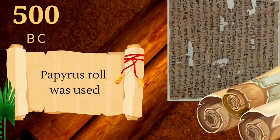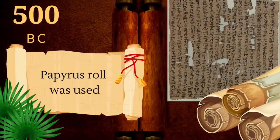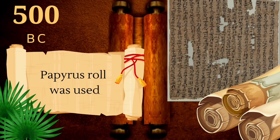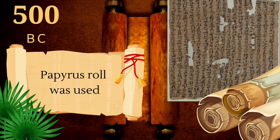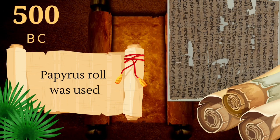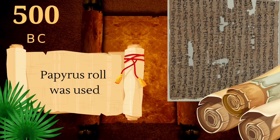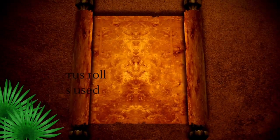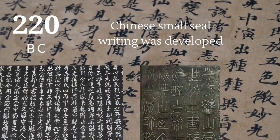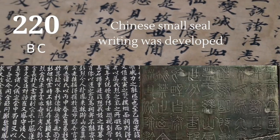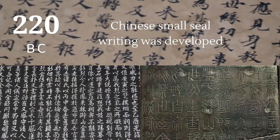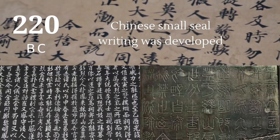In 500 BC, papyrus rolls were used. Papyrus is made from the stem of the papyrus plant, which is related to the grass family. In 220 BC, Chinese seal script writing was developed.